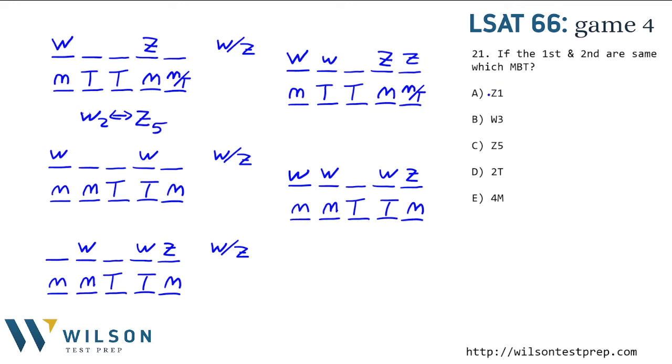Now, what do we have to have? Does Z have to be first? No, certainly not. W, third. Could be W. Could be Z. We don't know. Does Z have to be fifth? Yes, that has to be true. The second does not have to be traditional. The fourth does not have to be modern. So C is correct.